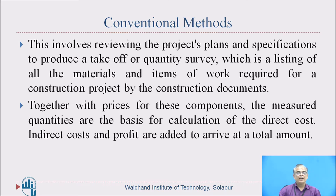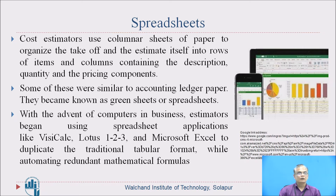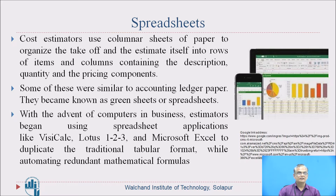Direct costs are the costs of materials and labor, and indirect costs are other costs like petty expenses, contingencies, etc. Profit will be added to these to arrive at a total amount. This was the procedure followed by contractors previously. They also used columnar sheets of paper to organize the take-off and the estimate itself into rows of items and columns containing the description, quantity, and the pricing components. Some of these were similar to accounting ledger paper and became known as green sheets or spreadsheets.